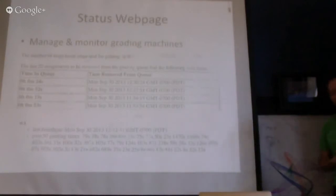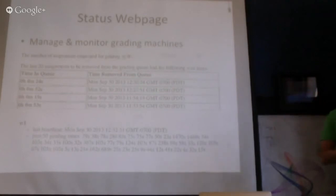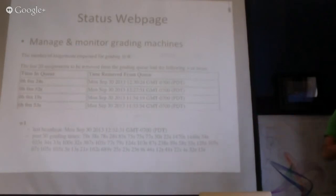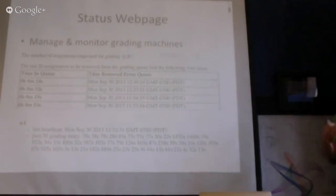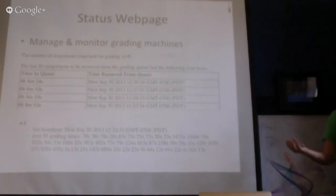Another thing that helped manage resources was maintaining a status and monitoring page for the graders. As Nick mentioned, as the deadline approaches — particularly for computationally intensive projects — the grading queue can begin to mount up. One way to ease that is to bring up more machines, but you don't want to run them all the time. Each machine records its pending workload and how long jobs have been in the queue. The staff sees a full version of that; students see a scaled-down version giving them a feel for the average wait time.